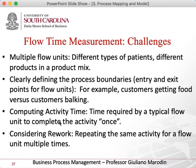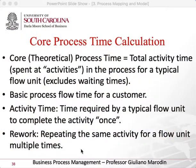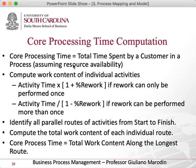We're also going to get into rework. Rework is the amount of time a unit comes back to the same activity. I need to understand how many products are coming back, because it consumes capacity or takes more time. Core processing time is the total time span of a customer in a process, assuming there are no waiting lines and no waiting between process steps. Rework is calculated as activity time times one plus the rework percentage.